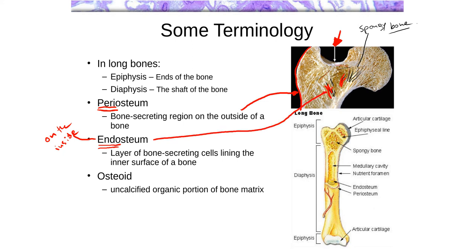I will show this to you very shortly in an actual slide. In both cases we're looking at bone-secreting cells, so there will be osteoblasts in both cases. In one case it's on the outside of a bone as a structure — that's the periosteum — and in the other case it's on the inside of a bone, but on the outer surface of bone matrix — that's the endosteum. The other term I need to identify is osteoid, which refers to the organic component of bone matrix — basically mostly type 1 collagen.